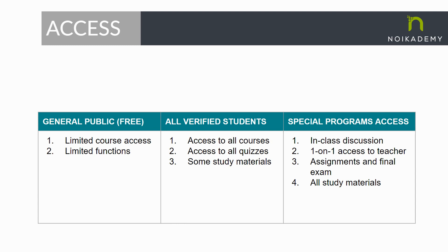Then there will be the second group — the verified students. These are people who have already been accepted in the Noe Academy program through a rigorous verification process back in December through March. These are people that are already officially in. They get access to all the courses available on the platform for students, access to all the quizzes, and study materials. Every now and then, such as now, we will also have special programs. Right now we have a bootcamp — that's a special program.